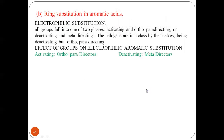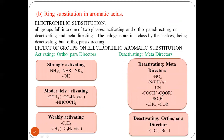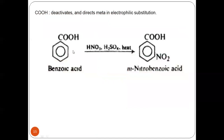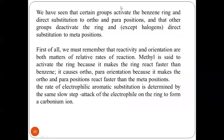Second is ring substitution in aromatic acids. The electrophilic substitution reaction is most important for these carboxylic acids. The carboxylic acid group on the benzene ring is a meta-director, meaning it directs the incoming electrophile to the meta position. For example, nitration of benzoic acid gives meta-nitrobenzoic acid.